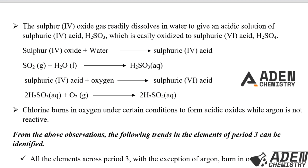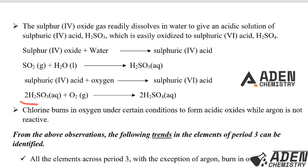Sulfur(IV) oxide gas readily dissolves in water to give an acidic solution of sulfuric(IV) acid (H₂SO₃), which can be further oxidized to sulfuric(VI) acid (H₂SO₄). The balanced equation: one mole of sulfur(IV) oxide gas reacts with one mole of water giving one mole of sulfuric(IV) acid. Then, two moles of sulfuric(IV) acid react with one mole of oxygen gas to give two moles of sulfuric(VI) acid.